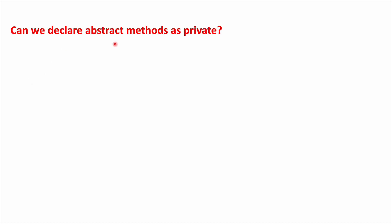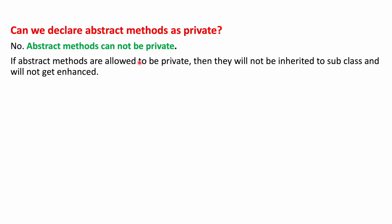Can we declare abstract methods as private? No, abstract methods cannot be private. If abstract methods were allowed to be private, they would not be inherited by subclasses and would not get implemented. If you declare a method as abstract, it needs to be implemented somewhere. But if you declare a method as private, it will be applicable within the class only and not available outside the class.